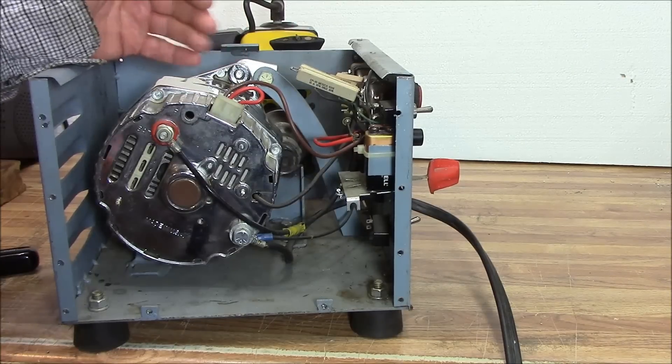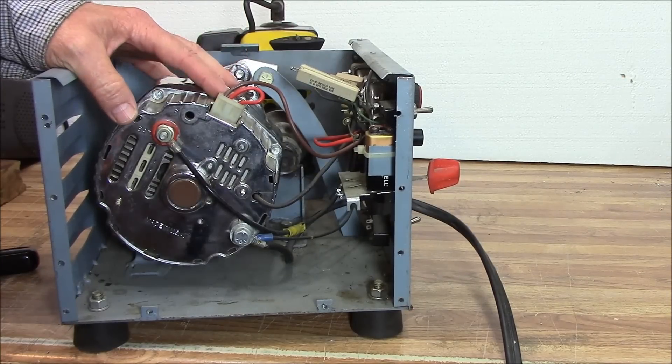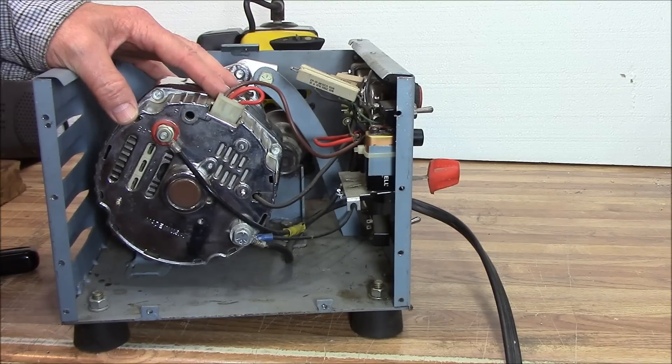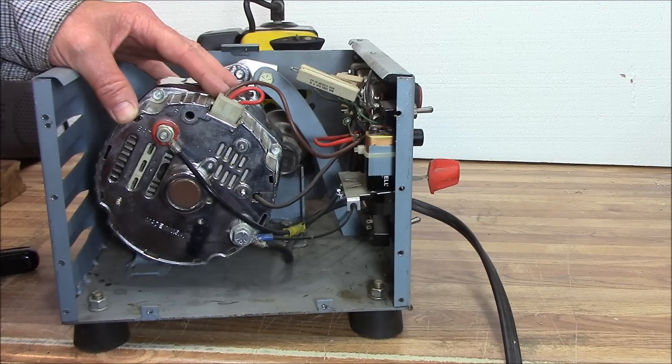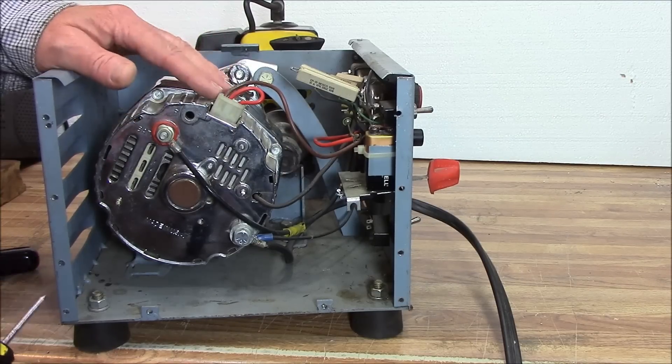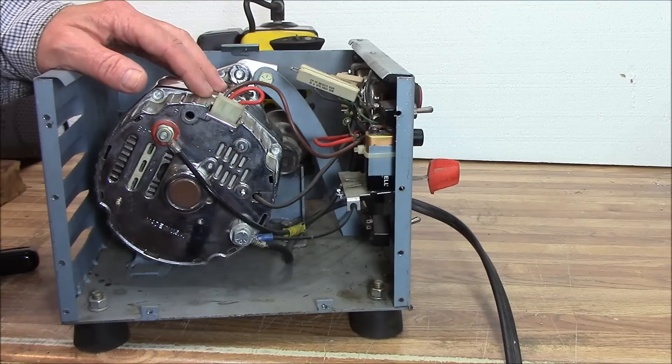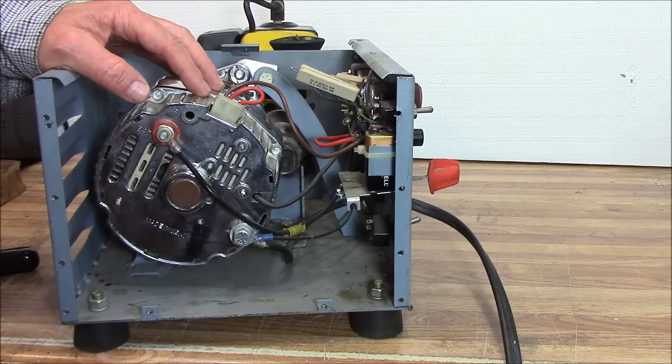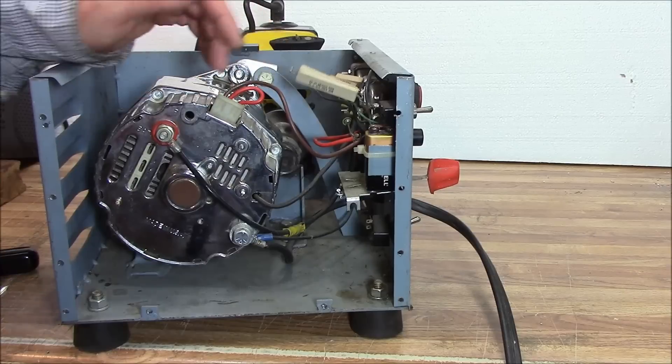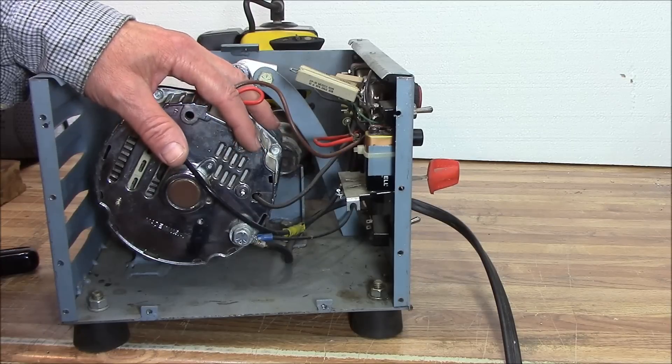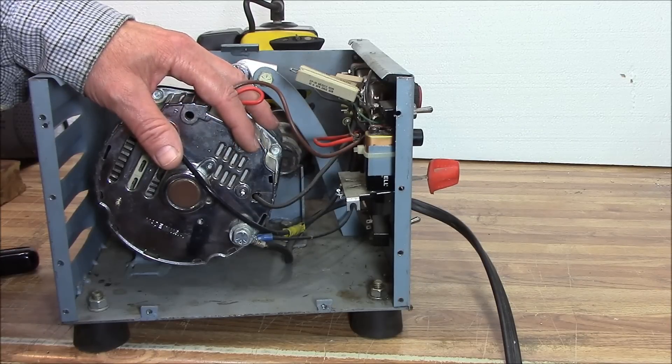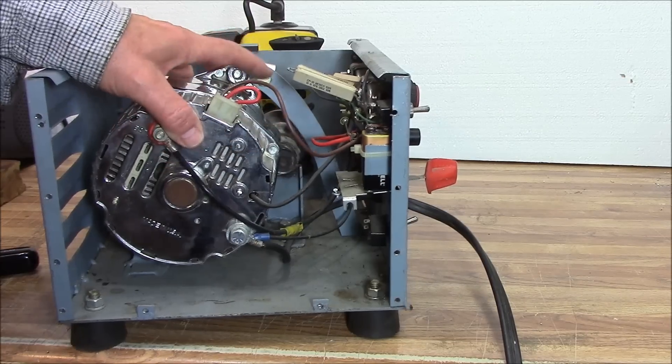The other end of this rheostat just goes to ground. This is a GM alternator. The early GM alternators are called an A circuit type alternator. It has two brushes in it. One of the brushes has full power at all times, always full power. Then the other brush is a ground brush, and that's what the voltage regulator varies—the ground voltage to control that alternator.